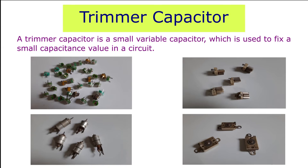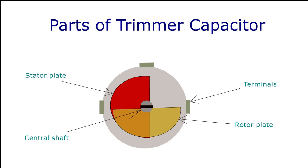A trimmer capacitor is a type of adjustable capacitor used to fix a small capacitance value in a circuit by varying the rotor using a screwdriver. These capacitors have a smaller capacitance value than the tuning capacitors. Once it is adjusted, it is permanently fixed to that position, which is suitable for trimming and calibration. The trimmer capacitor consists of two semicircular discs or plates — one is the rotor and the other is the stator. The dielectric material is placed in between these plates. It has a central shaft where the rotor is attached and it is moved around the stator using a screwdriver.